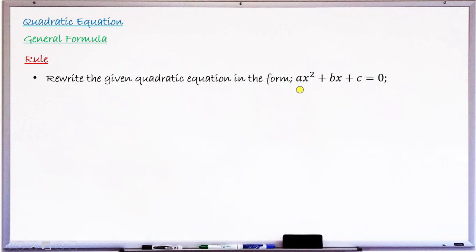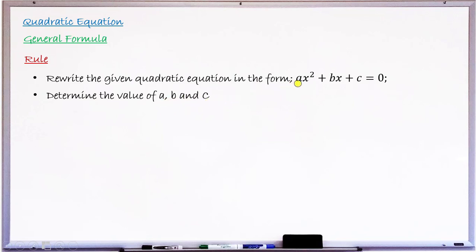This is the general form of the quadratic equation. In case the terms are not arranged like this with zero on the right-hand side, you have to rearrange the quadratic equation into this format. When that is done, step number two is to determine the values of A, B, and C. A is the coefficient of the square term, B is the coefficient of the letter term, while C is the constant term.